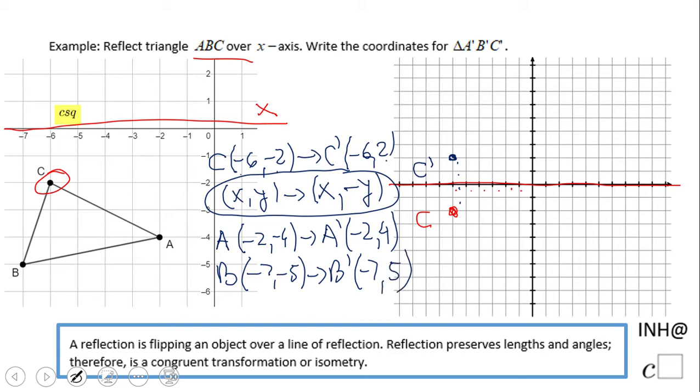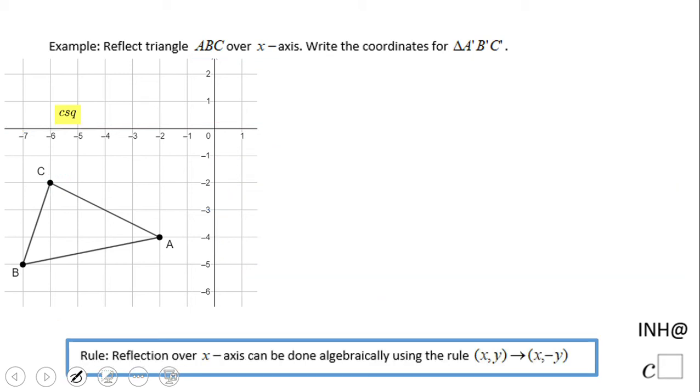Basically, that's the rule that you may want to remember: (x, y) → (x, -y). You have two more examples here about this rule. If this video helps you, don't forget to click the like button and come back for more help.